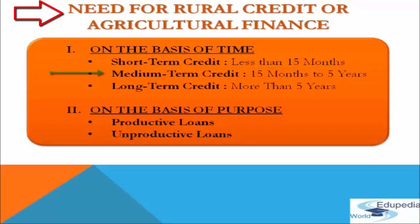The second category is medium-term credit. It refers to credit taken for a medium period ranging from 15 months to 5 years. Such loans are required for productive activities like purchasing cattle and agricultural implements, as well as unproductive activities like expenditure on marriage and social or religious functions.